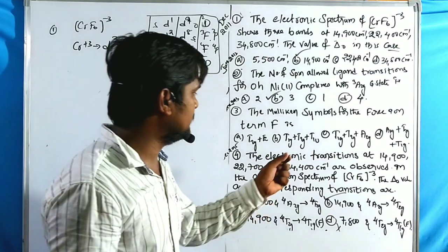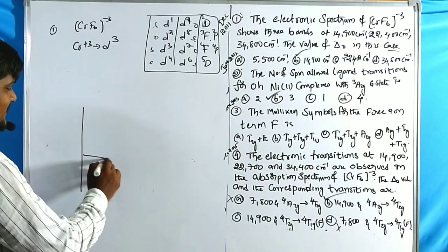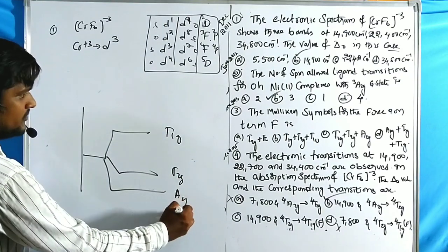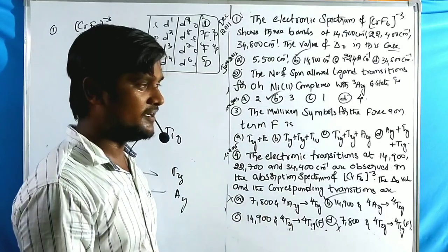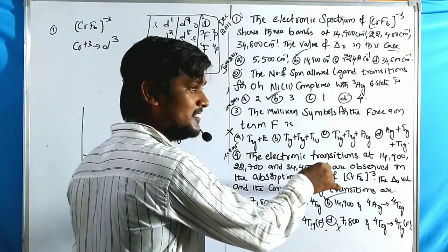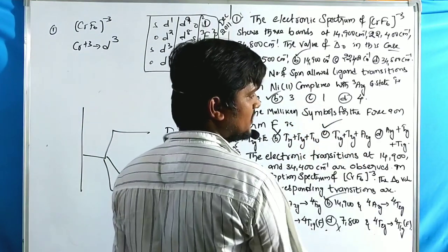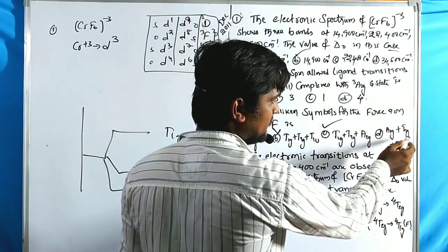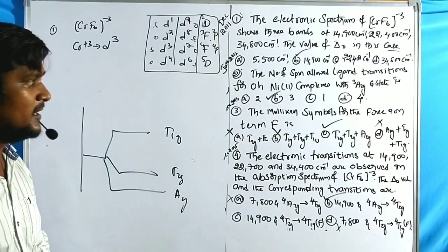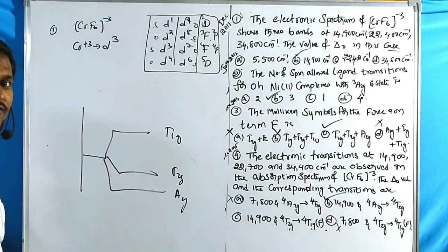Problem 3: Mulliken symbols for the free-ion f-term in octahedral splitting. The f-term splits into t₁g, t₂g, and a₂g. Checking the options: t₂g and E is wrong; t₁u is wrong; t₁g, t₂g, a₂g is correct; a₁g, t₂g, t₁g is wrong. The answer is t₁g, t₂g, a₂g. This question appeared in June 2012.